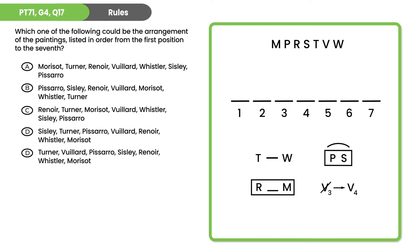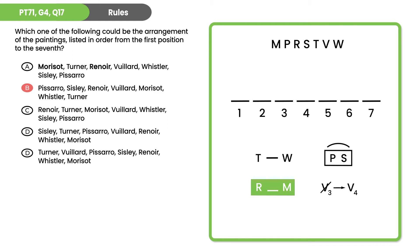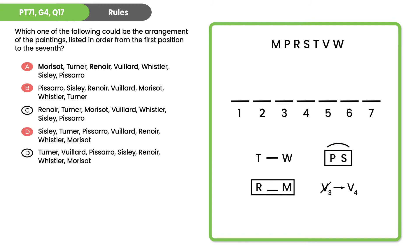Take the first rule and look for answer choices where T is not in front of W. In B, W is in front of T, so we can eliminate that. The second rule requires an R-space-M chunk — it doesn't occur in answer choice A, so we eliminate A. The next rule: P and S must be consecutive — they're not consecutive in D, so we eliminate D. For the last rule, if V is not third, then V must be fourth — V is not fourth in answer choice E, so we eliminate that, leaving us with answer choice C as the right answer.